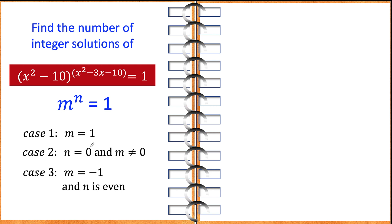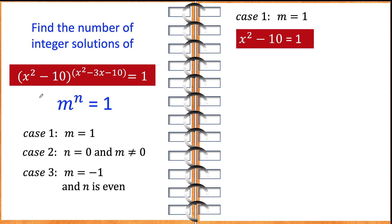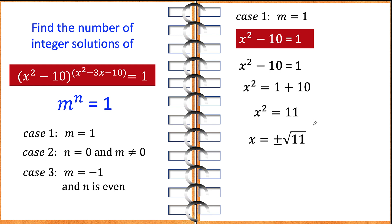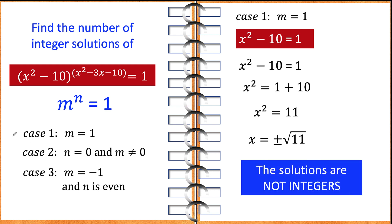We are going to look at the number of integer solutions for each of these cases and then count the total. Let's begin with the first case, when the base x squared minus 10 equals 1. We add 10 to both sides to get x squared equals 11, then take the square root to get x equals plus or minus square root of 11. These roots are radicals, not integers, so there are 0 integer solutions for case number 1.